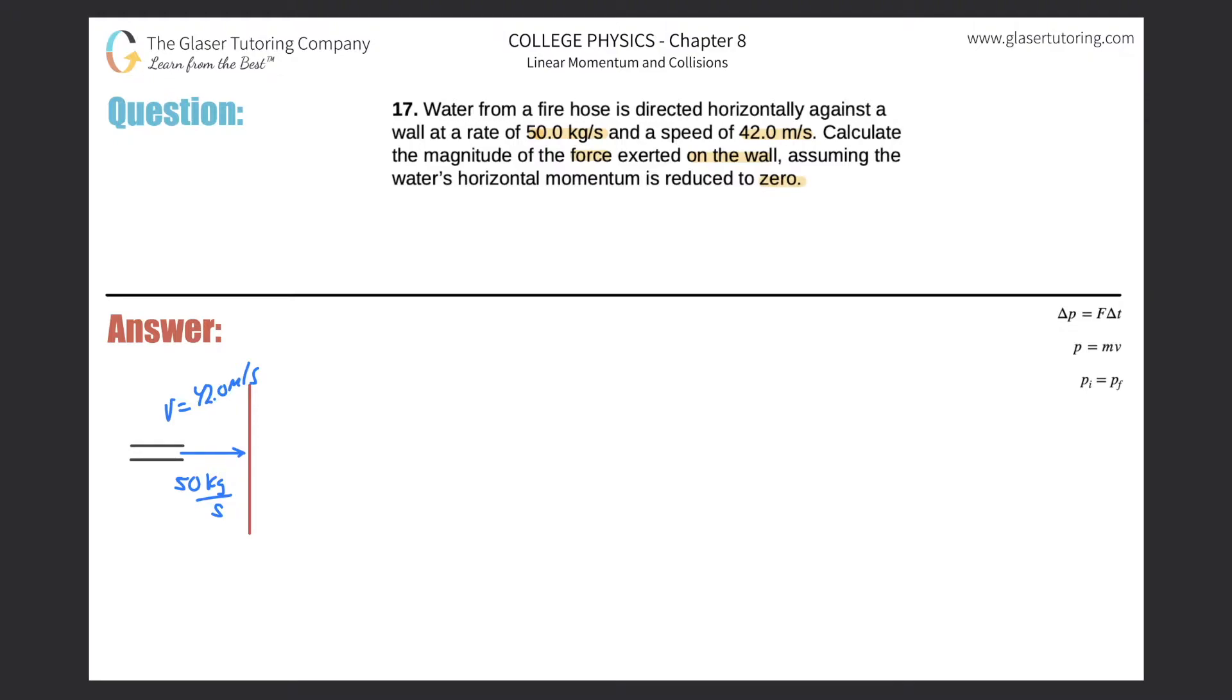This problem almost feels like it doesn't have enough information that we need to solve, but we do. And they also give us this weird thing - a mass per second of the water coming out. So if we had to take a guess, they're talking about force and they're saying that the momentum is reduced to zero. So I'm thinking about momentum, force, what formula?